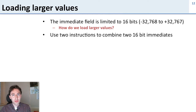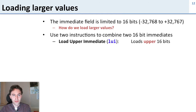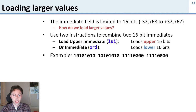The way we do this in MIPS is we combine two 16-bit immediates. We're going to use two instructions: one that loads one half of this 32-bit value and another that loads the other half. The first instruction is load upper immediate, which loads the upper 16 bits, and then we use OR immediate, which loads the lower 16 bits.